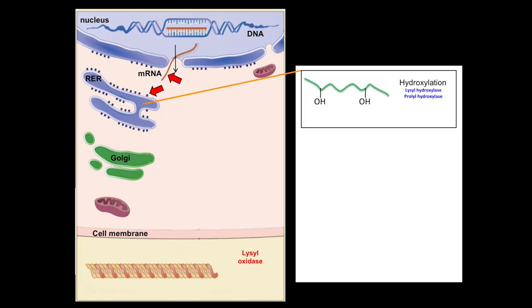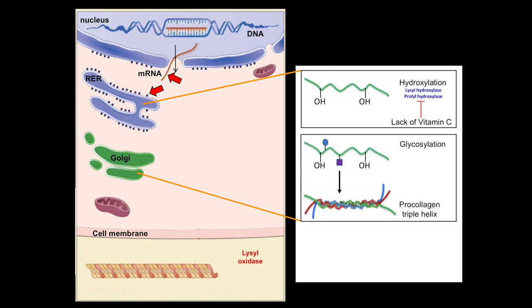Pro-collagen alpha chains contain many proline and lysine amino acids, and specific hydroxylase enzymes add hydroxyl groups to these amino acids in a vitamin C-dependent manner. Lack of vitamin C blocks this step and can result in disease — what disease might this be? These chains are also highly glycosylated. Next, three alpha chains are selected, stabilized by disulfide bonds, and fold into a triple helix called a pro-collagen molecule — the hallmark of collagens. Failure to properly assemble this trimeric structure results in osteogenesis imperfecta, caused by mutations in a number of different genes.